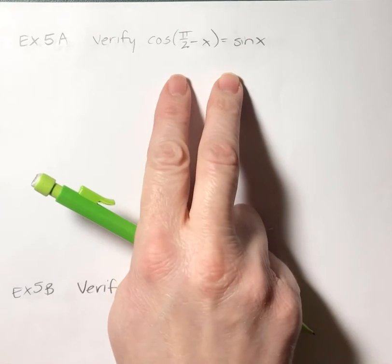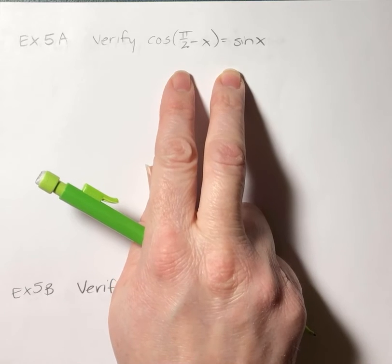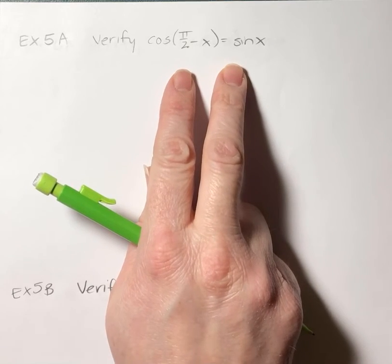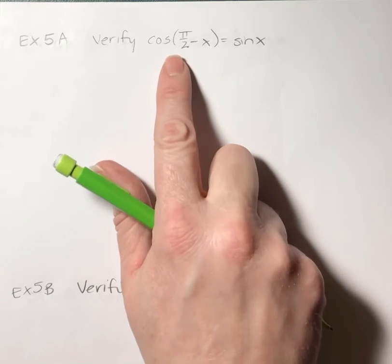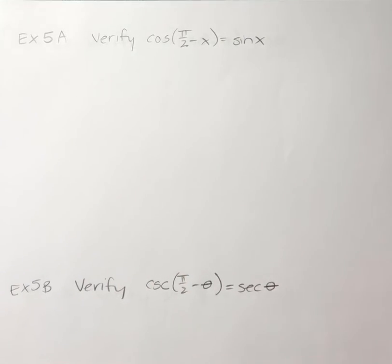All right, so now we have some identities to prove, and these end up being a whole lot easier than any of the identities that you had in 5-2, because all that you have to do is go through the sum or difference pattern.